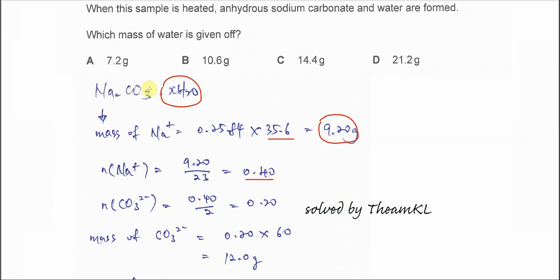From this formula, we know that the ratio between the sodium and the carbonate is 2 to 1. So the moles of carbonate in the salt will be halved compared to the sodium ion. So the mole of carbonate therefore is 0.4 over 2, you get 0.2.